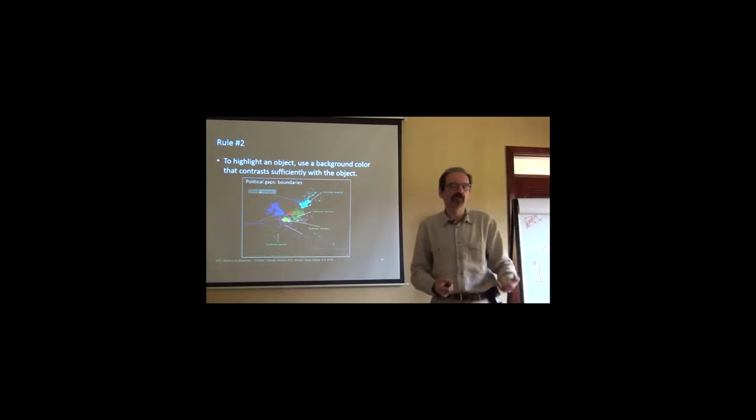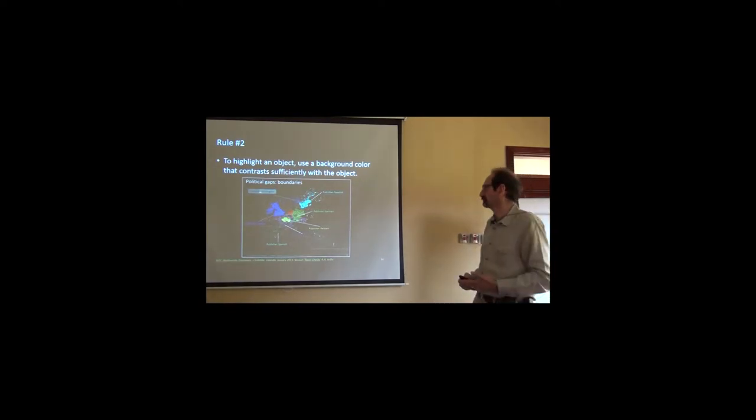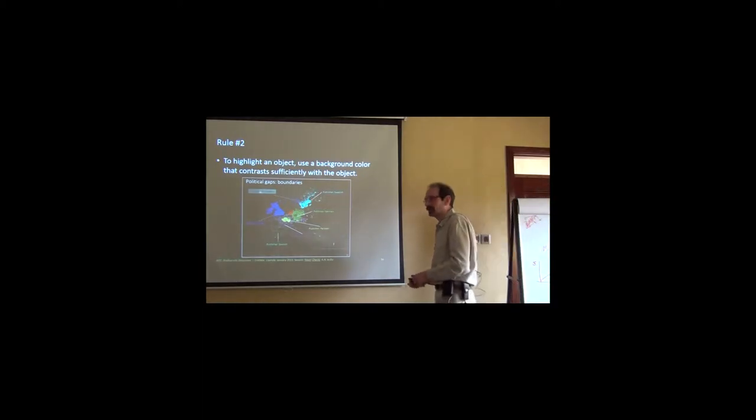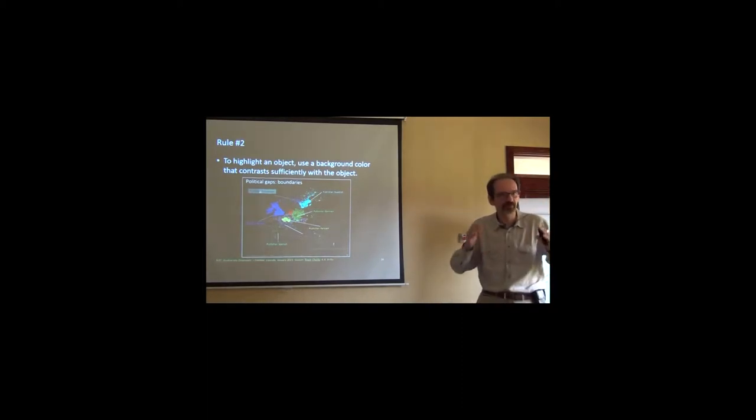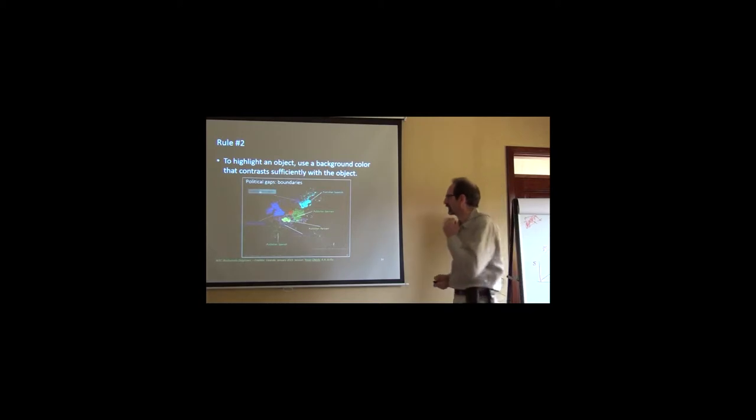Colors, rule number two, can be used to highlight an object. And if you want to use to highlight an object, you don't pay attention only to that object. You pay attention to the background. Basically, often what you can do is to tone down the background rather than trying to get more color in your foreground. Just blend the background so it disappears. So you can see what's really important, the highlight, the Parisian.